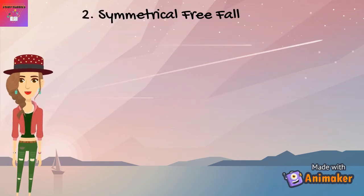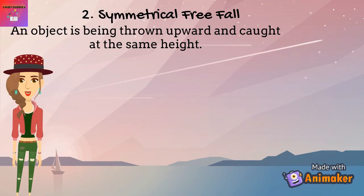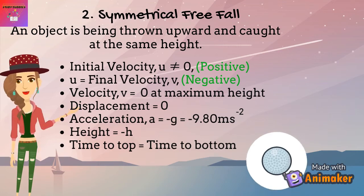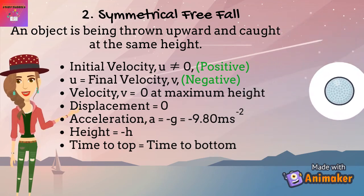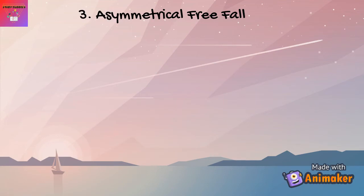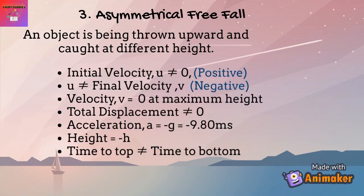The second situation is symmetrical free fall: an object is thrown and caught at the same height. Initial velocity is not zero, initial velocity equals final velocity in magnitude, but initial is positive and final is negative. At maximum height, velocity becomes 0, displacement is 0, and time to reach maximum height equals time to return to the ground. The third situation is asymmetrical free fall: the object is thrown and caught at different heights. Initial velocity does not equal final velocity, total displacement is not zero, and time up does not equal time down.